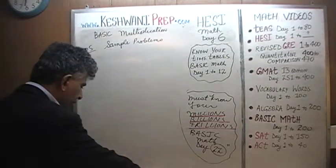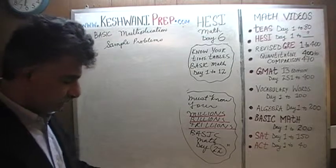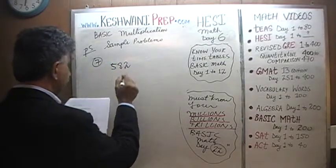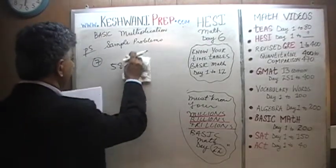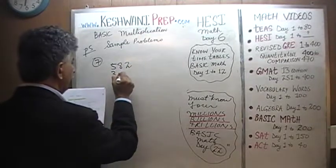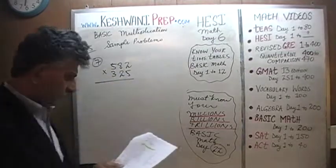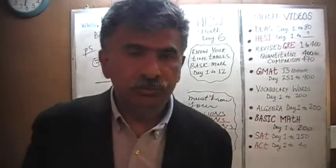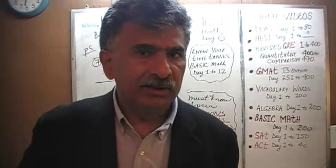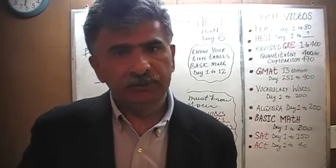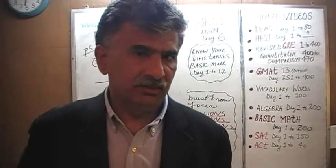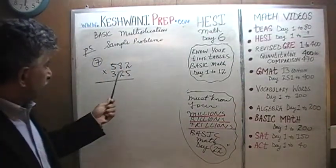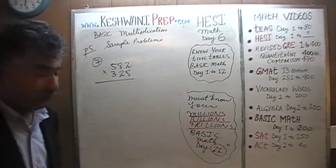Let's do number one — let's get going. We have done up to problem number six yesterday. We are going to start with problem number seven: 582 times 325. As you can clearly see, if you were to sit there and do this problem the traditional, conventional, orthodox academic way, it will take too long. In the exam, you must know how to estimate — how to locate the right answer quickly and efficiently. Let's first do the estimation here.